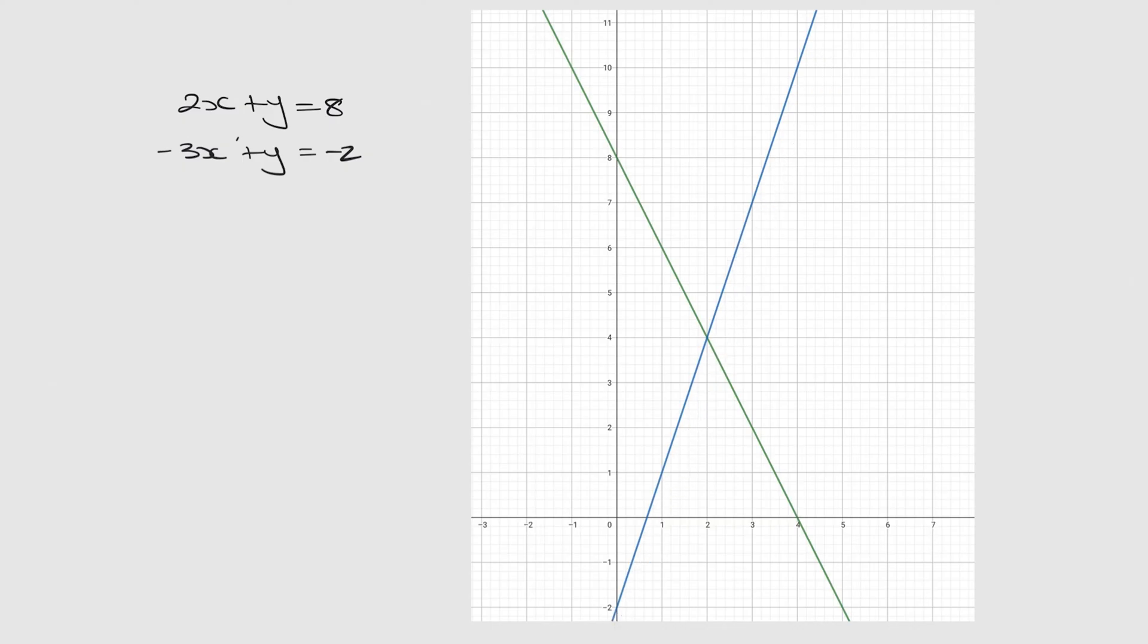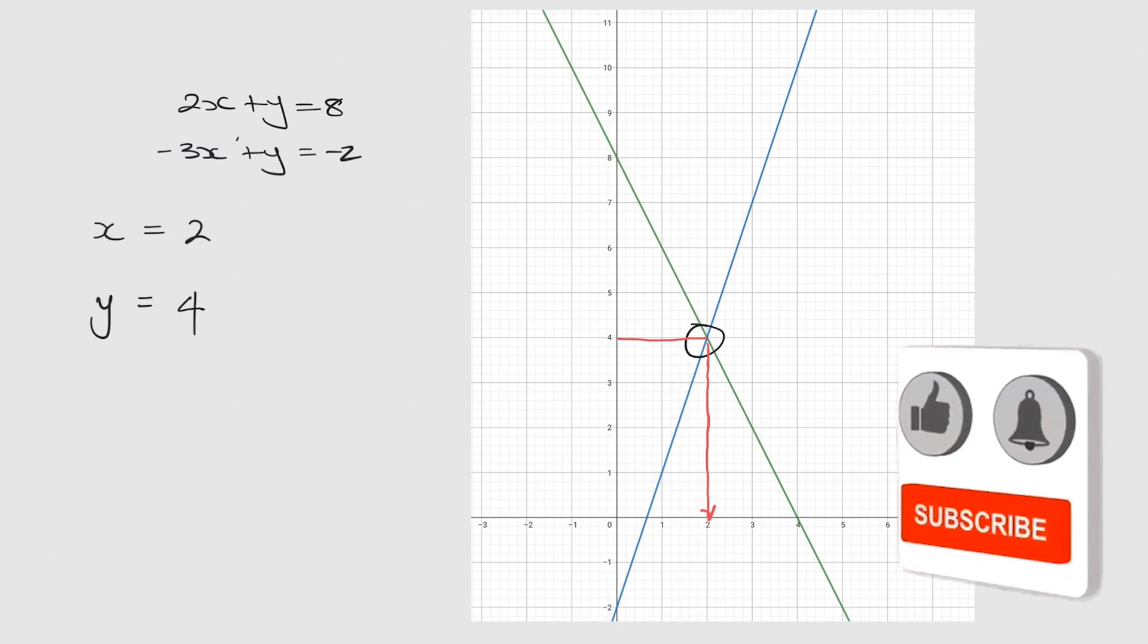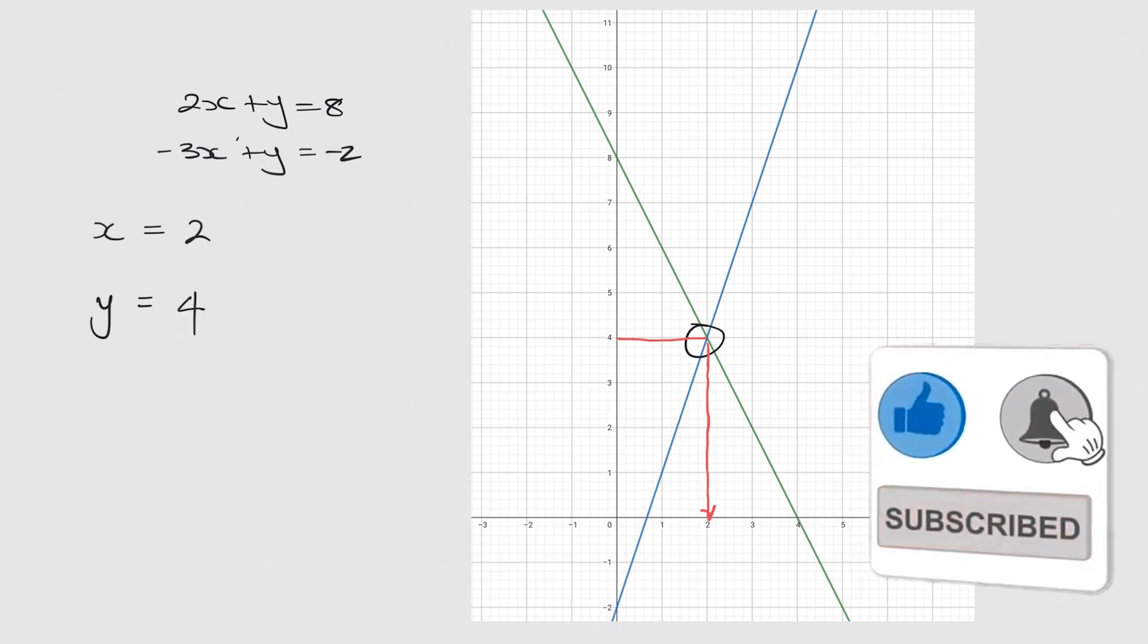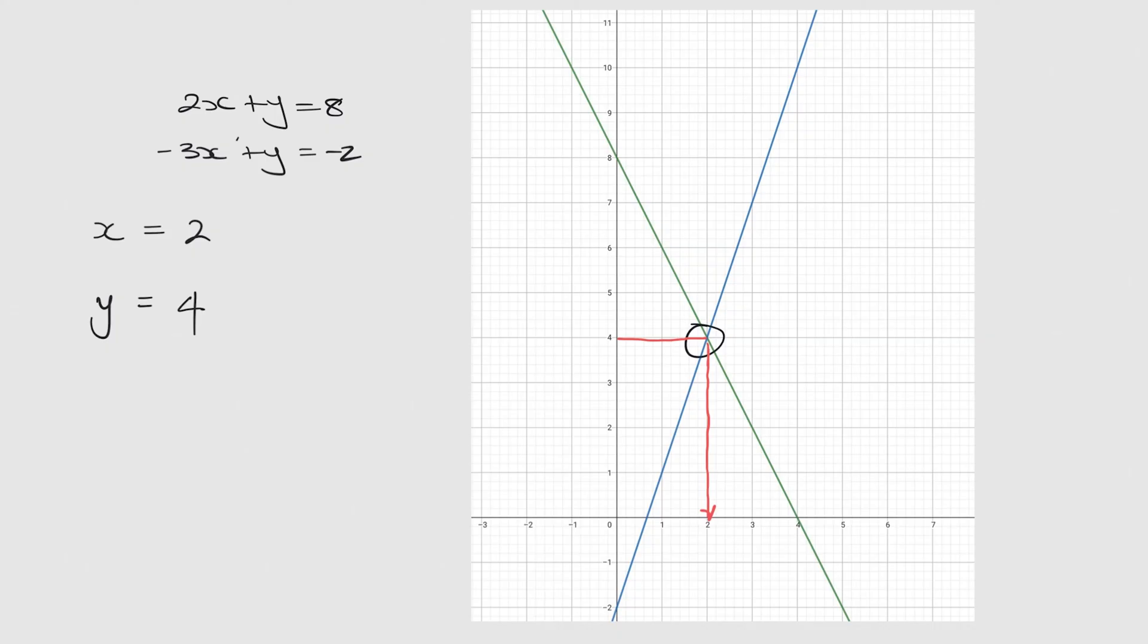And where do we find our solutions? Well, we find our solutions where the two graphs cross each other. So you can clearly see they cross each other here. And usually, in a pair of simultaneous equations, if it's two linear equations, we're going to have two answers. And the first answer will come straight from the x-axis down here. So you can clearly see that first answer says x is equal to 2. And my second answer goes straight across there, and that's going to say y is equal to 4. And that's how you solve a pair of simultaneous equations using graphs.